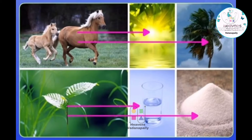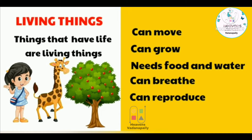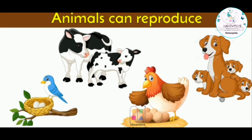So how do you differentiate between living things and non-living things? Living things can move, they can grow, they need food and water, they can breathe and reproduce. Reproduce means they can have babies.